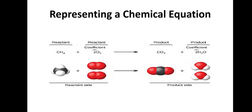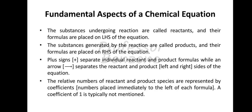In this example, CH4 and O2 are reactants, and on the right side there is CO2 and H2O, which are products. On the left side, O2 has a coefficient of 2, and on the right side H2O has a coefficient of 2. CH4 and CO2 each have a coefficient of 1. This means 1 molecule of CH4, 2 molecules of O2, 1 molecule of CO2, and 2 molecules of H2O.